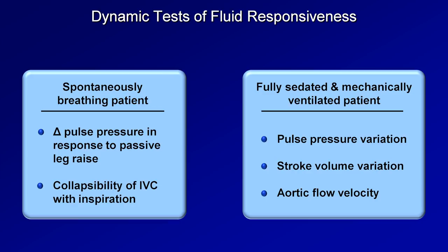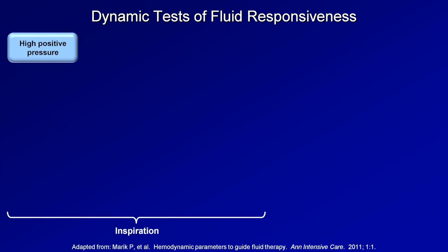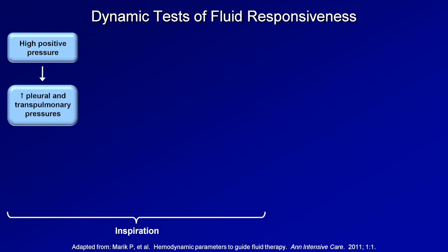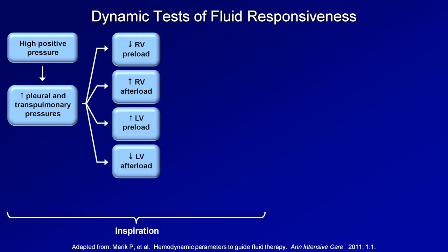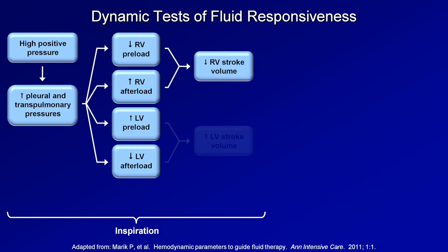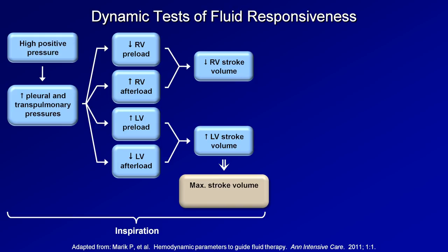Dynamic tests of fluid responsiveness in ventilated patients rely on the cyclical changes in hemodynamics caused by the cycling of the ventilator. High positive pressure during inspiration results in high pleural and transpulmonary pressures. This combination leads to four interdependent effects on the heart: decreased RV preload, increased RV afterload, increased LV preload, and decreased LV afterload. The top two result in decreased RV stroke volume, and the bottom two result in increased LV stroke volume. These effects are most prominent at the end of inspiration when the airway pressure is greatest. Since the LV stroke volume is the primary determinant of the pulse pressure — the difference between systolic and diastolic blood pressures — that also is at a maximum at the end of inspiration.